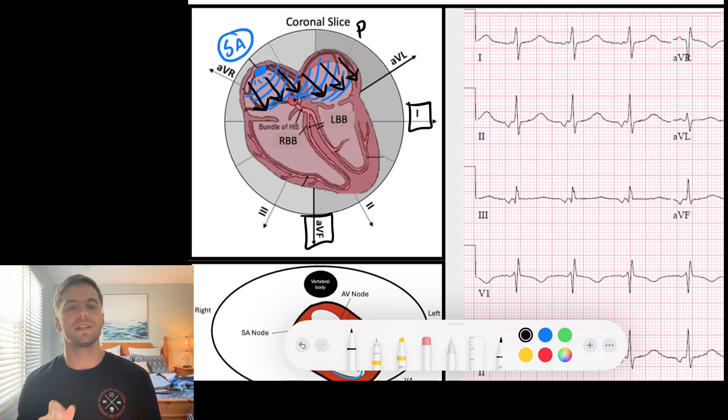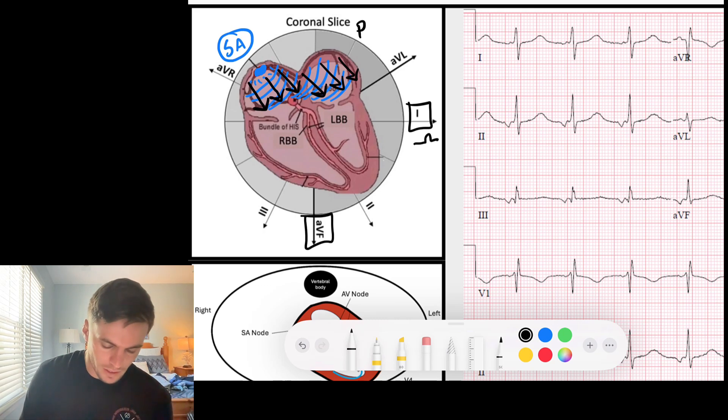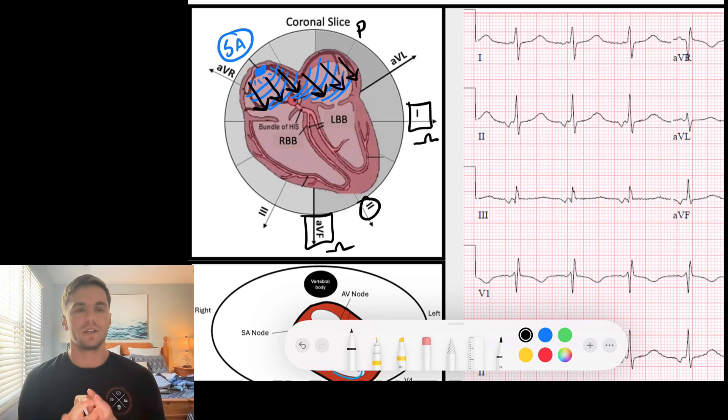And those P waves, if they're going down into the left, are going down towards AVF and left towards lead one. So we know that sinus P waves are upright in lead one and upright in AVF. Obviously they're going to be upright in lead two if that's the case, because it's also going down to the left.